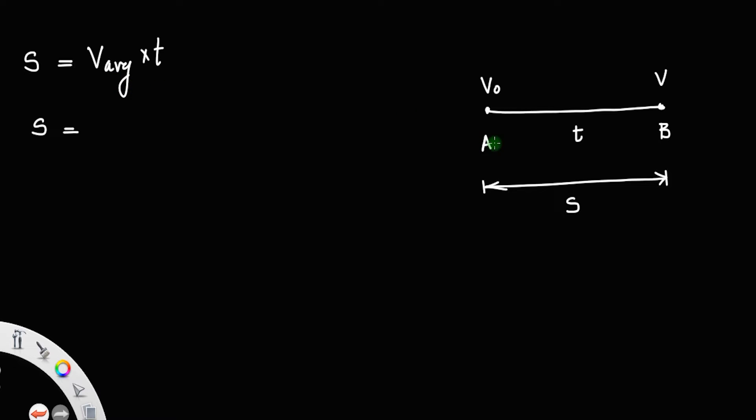So displacement equals average velocity times time. Average velocity is always the arithmetic mean of initial and final velocity, that is (v + v₀)/2 times t. Call this equation number 1.